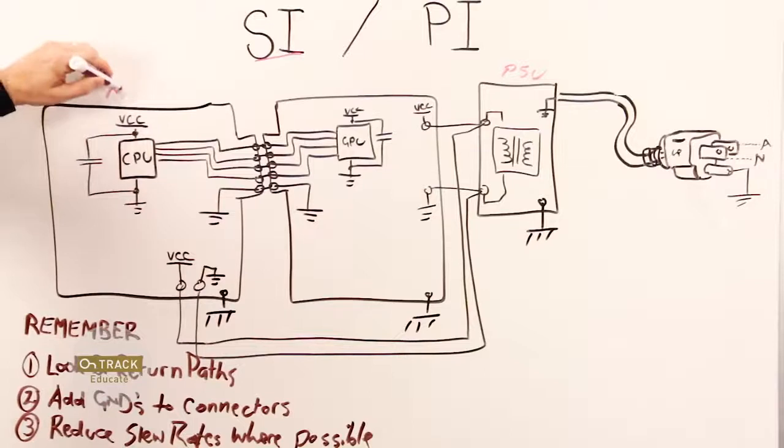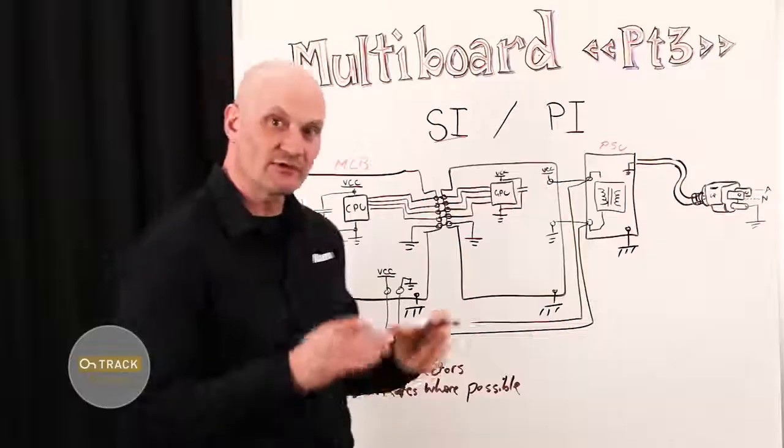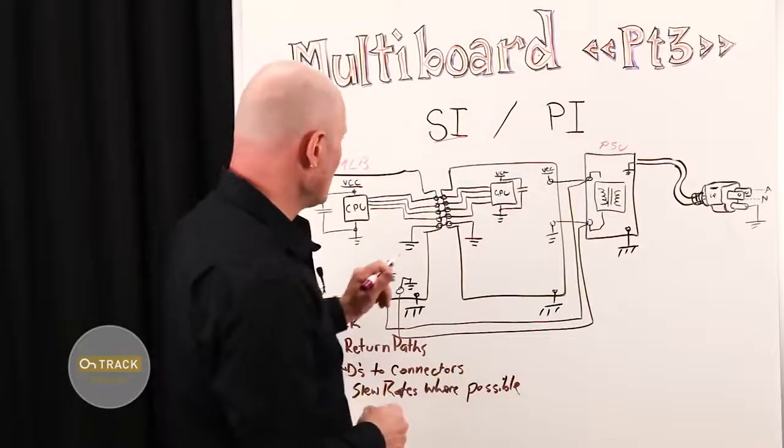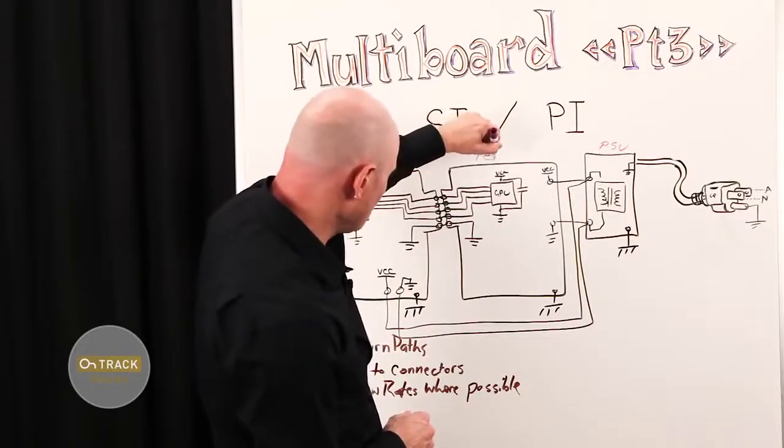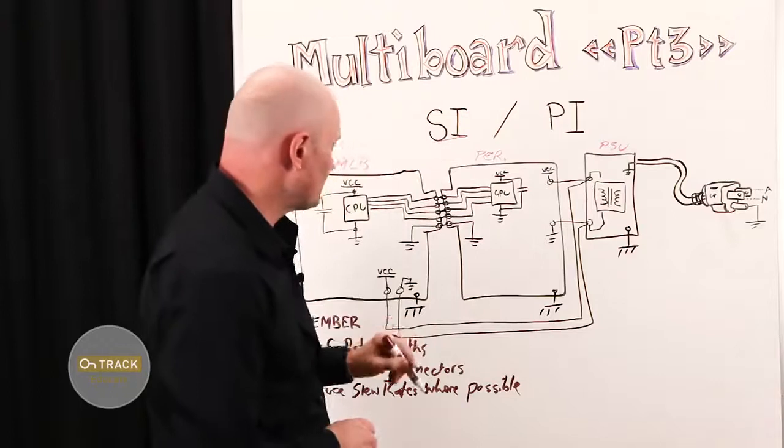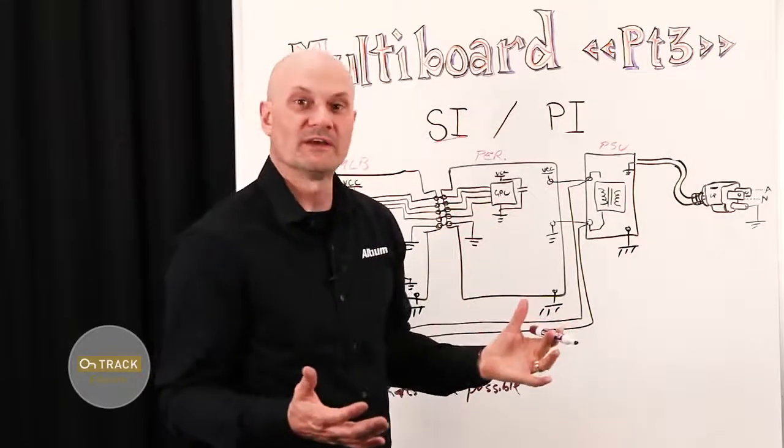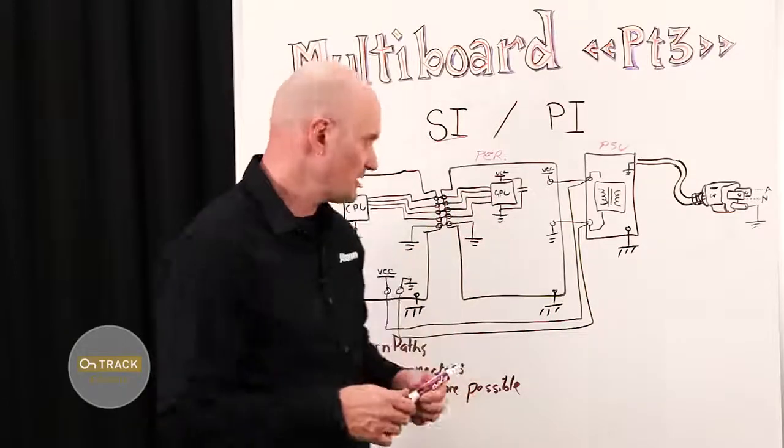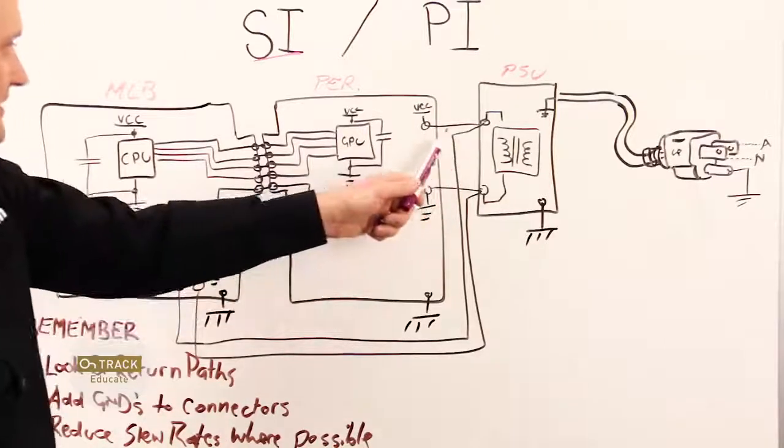I have this illustration I've done here with a power supply over here, so let's call that the power supply unit or PSU. Over here I have a main logic board or MLB, and on that main logic board I have a CPU which is kind of our central driving device for controlling everything. And just for argument's sake, I have a peripheral board here, let's call it PER for short, peripheral board.